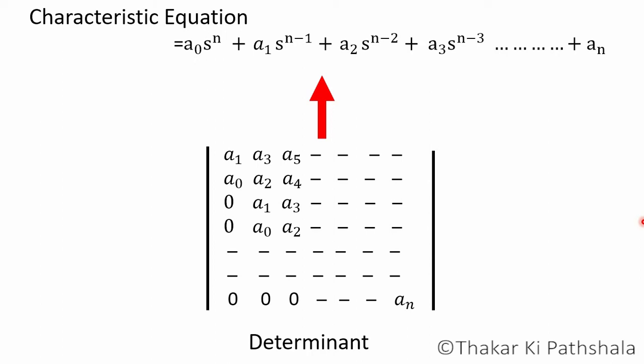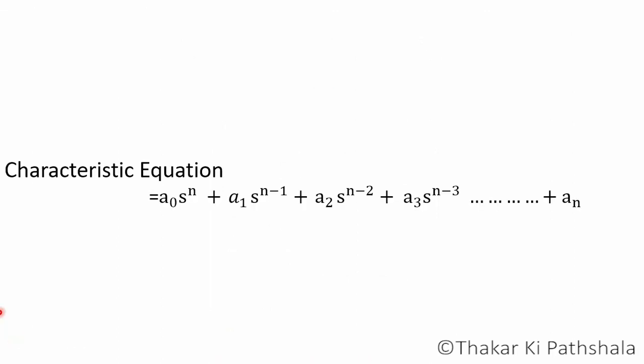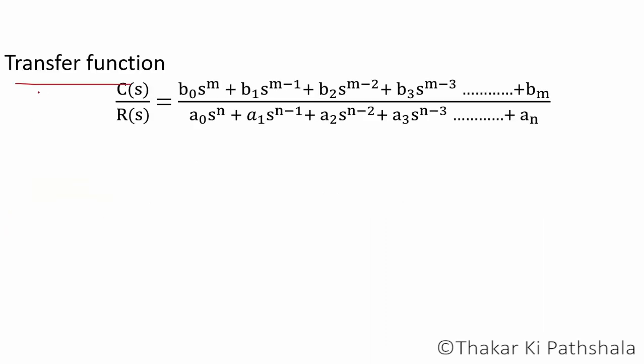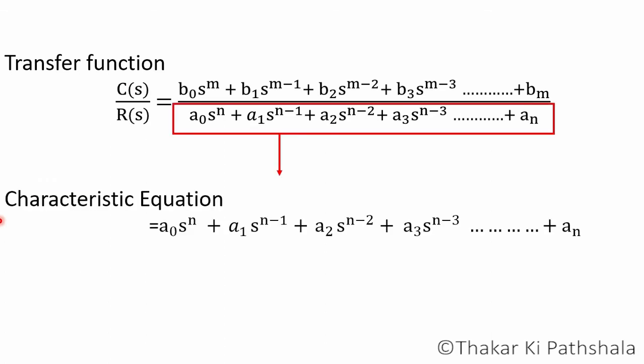First of all, to write the determinant you will need a characteristic equation. It depends on the mood of examiner that either they can give you a direct characteristic equation or they can give you a transfer function. If they do so, then the denominator of the transfer function is our characteristic equation.